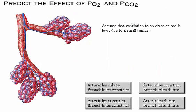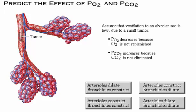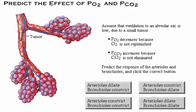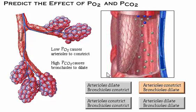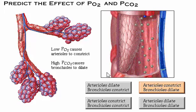Assume that ventilation to an alveolar sac is low due to a small tumor growing in the bronchiole. The PO2 decreases because oxygen is not replenished, and the PCO2 increases because the carbon dioxide is not eliminated. The low PO2 causes the arterioles to constrict, and the high PCO2 causes the bronchioles to dilate. The airflow and blood flow are now in the proper proportions for optimum gas exchange. Notice that both the arterioles and bronchioles respond simultaneously.